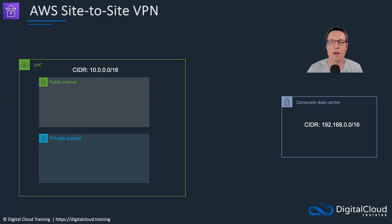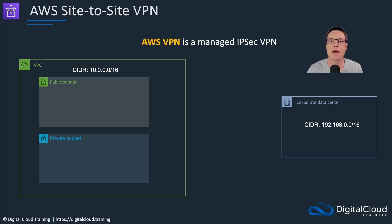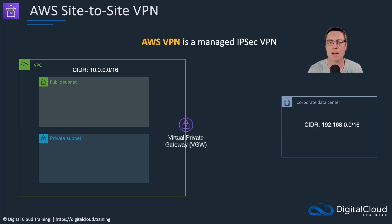Here we have an on-premises network on the right-hand side — the corporate data center — with its own CIDR block. On the left-hand side, we have a VPC. A VPN is a managed IPsec virtual private network. You can create your own software-based VPNs, but what we're talking about here is an AWS managed VPN — a service provided by AWS that uses IPsec for encryption.